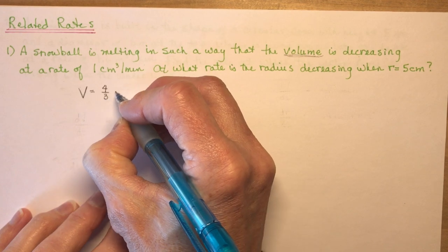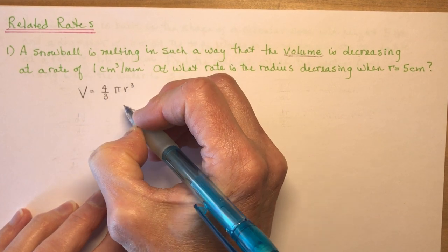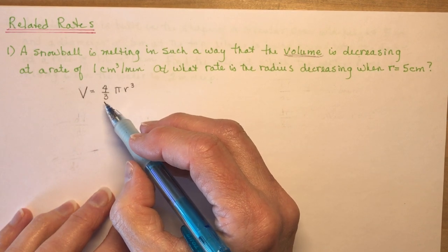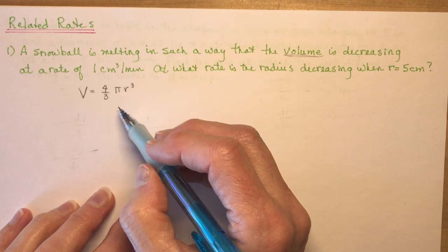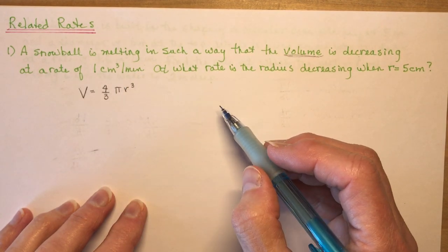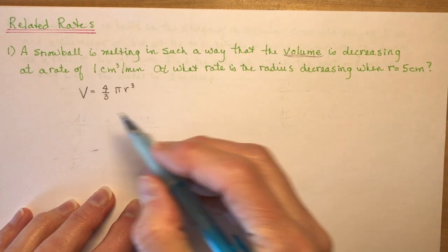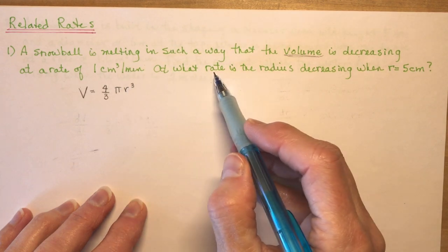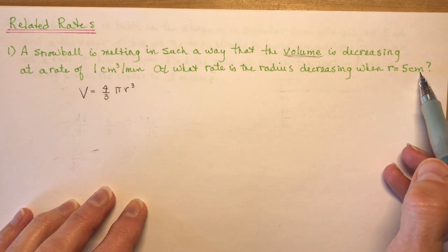So the volume of a sphere is four-thirds pi r cubed. Hopefully your teacher will give you these formulas, or at least a list of the ones you should know — this isn't one that a lot of people remember. So the volume is decreasing at a rate of one centimeter cubed per minute. At what rate is the radius decreasing when r is five centimeters?